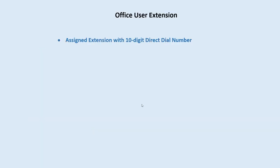With each extension in the system you get an assigned 10-digit direct dial number. Individual text and SMS is enabled for the DID — each extension comes with a direct dial number that is also textable. So people can text you back and forth without needing your cell phone number, which is a pretty nice feature.